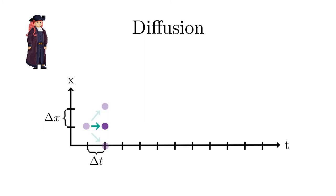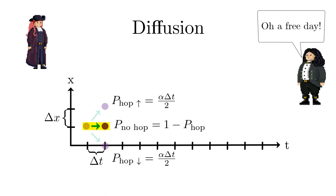We make the obvious assumption that the hopping probability is proportional to the time interval dt. Then the probability that no hopping occurs in dt is 1 minus the hopping probability. That defines the random walk. The only difference to the previous case is the possibility that the walker does not move in each time step. That would correspond to the free day Bernoulli is longing for.